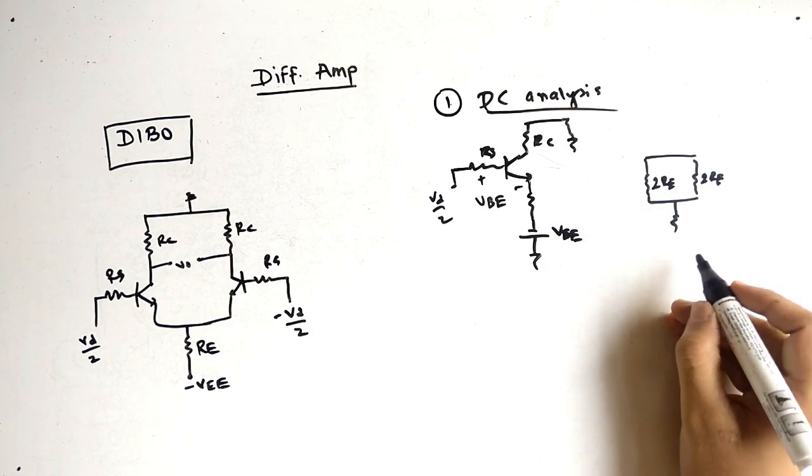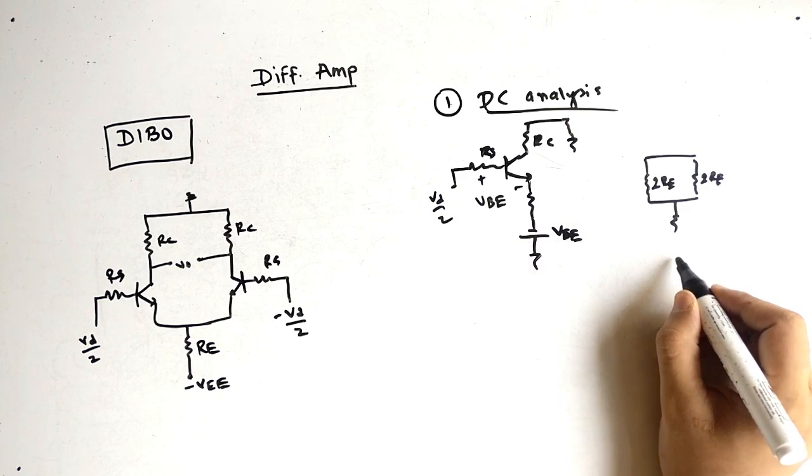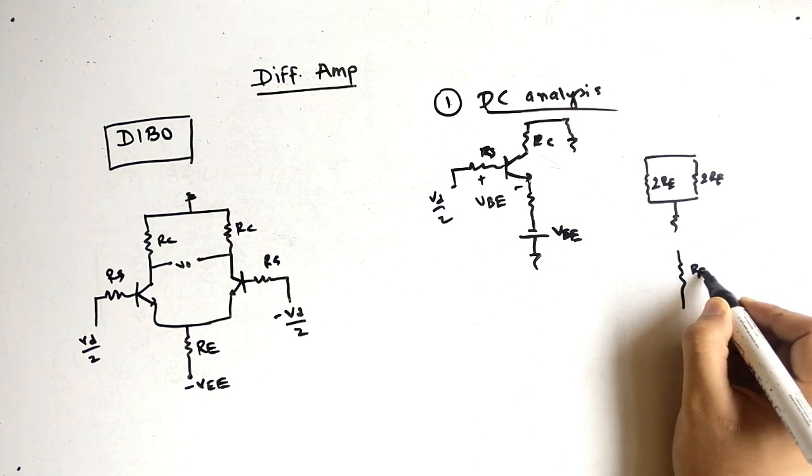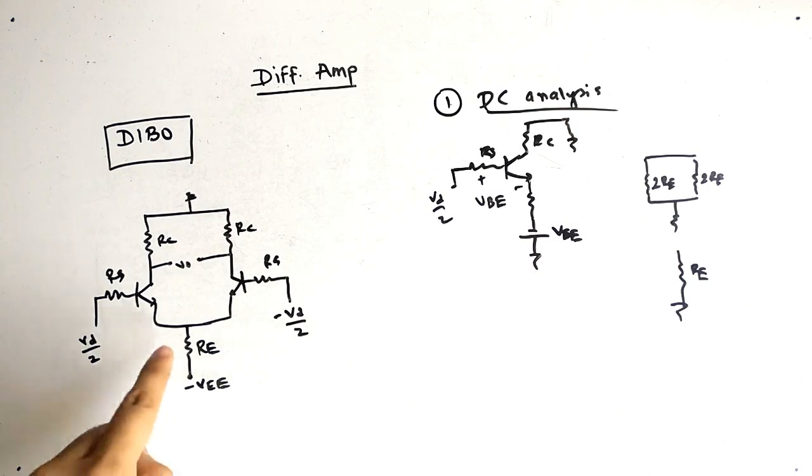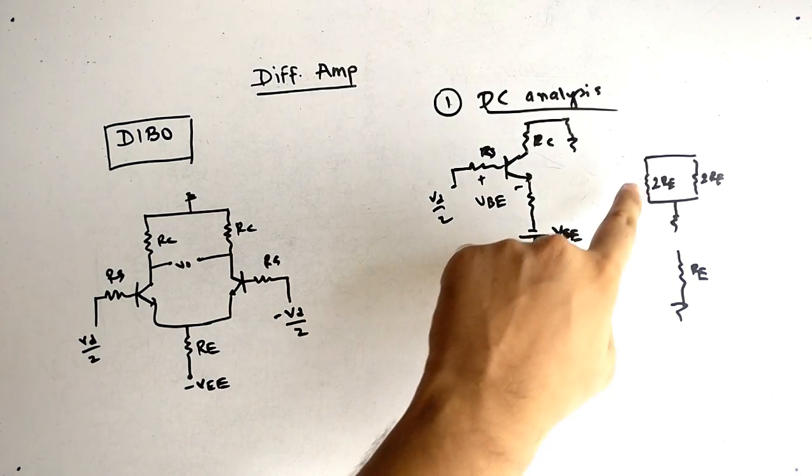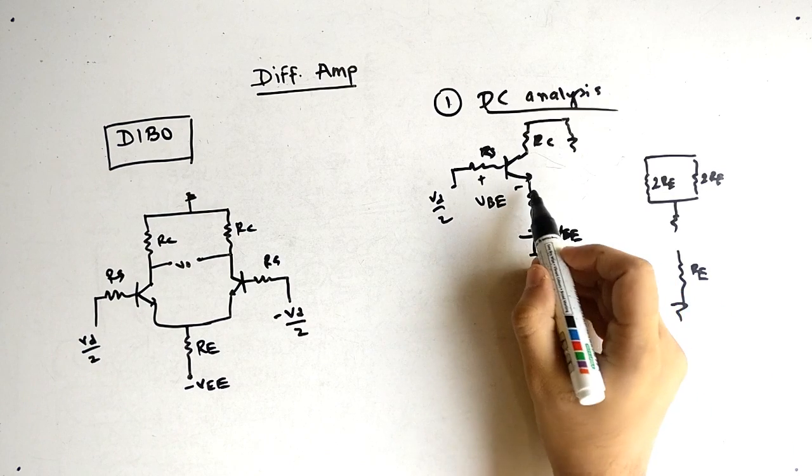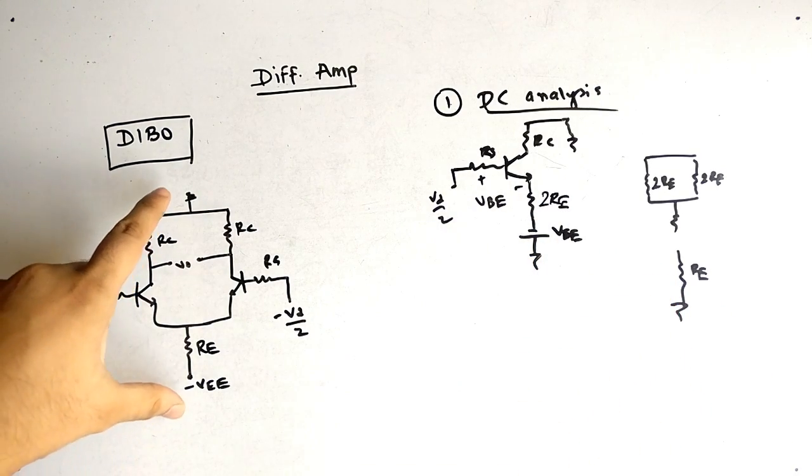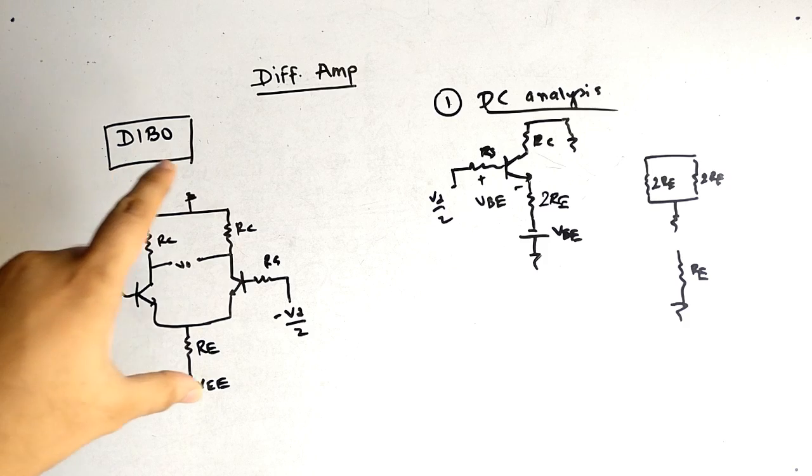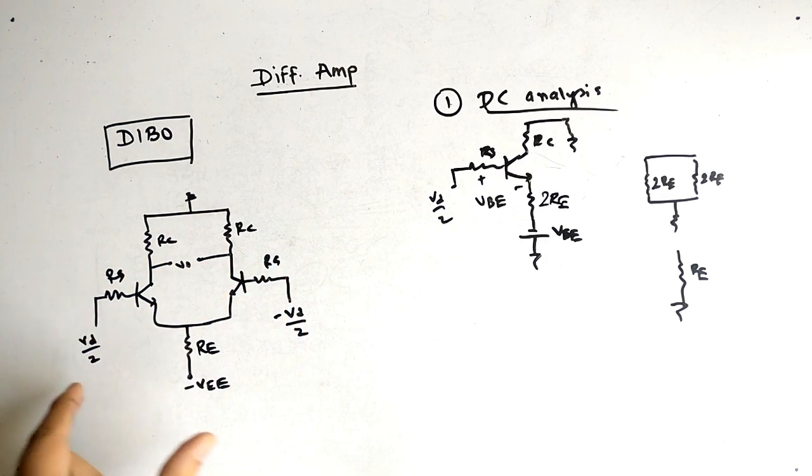So what will be the value here? Suppose if I write twice of RE. Now they are in parallel, right? Now if we club them to one we will get RE, and so is the resistance here.